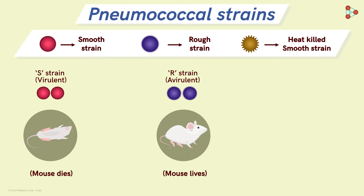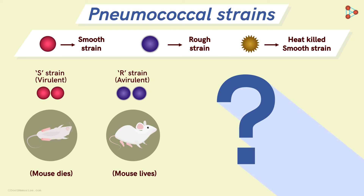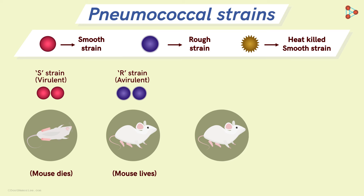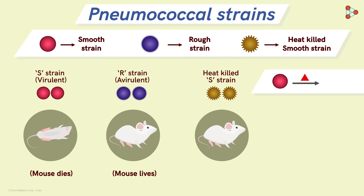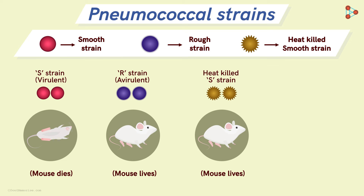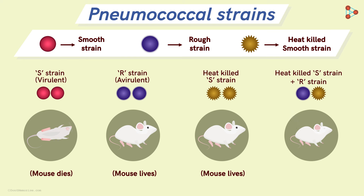This was pretty much anticipated by him because the rough strain is usually the avirulent one. Next, a third mouse was injected with the S strain, but after the bacteria were heat-killed. That means he heated the S strain to extreme temperatures, which killed the virulent strain and made it ineffective, so the injected mouse survived. Then, Griffith injected a fourth mouse with a mixture of both the rough strain and the heat-killed smooth strain.